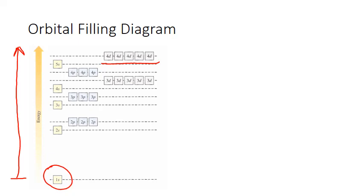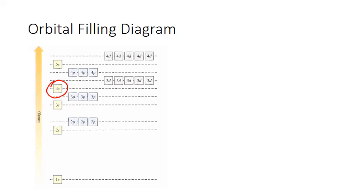Another consistent pattern in orbital filling diagrams is the splitting of higher energy levels. For example, the 4s sublevel actually comes between 3p and 3d in terms of energy. As you go further out from the nucleus, the differences in energy between the different principal energy levels get smaller and smaller. Those principal energy levels get closer together in terms of energy, and there are some subtle differences in the standing wave patterns associated with S and P sublevels at those higher principal energy levels that create some chance for higher electron density a little closer to the nucleus.